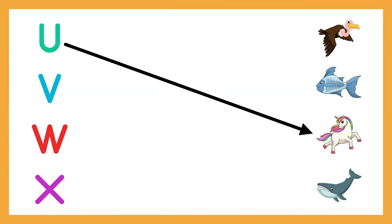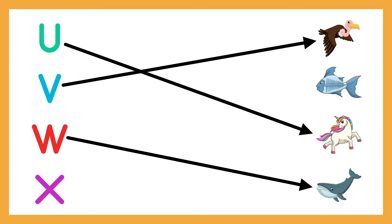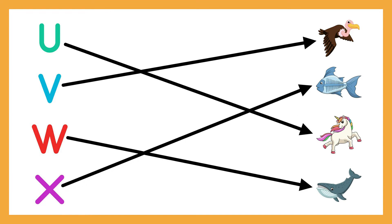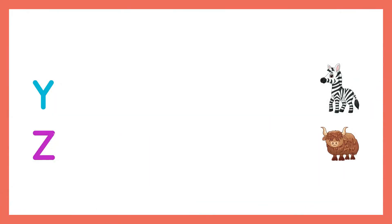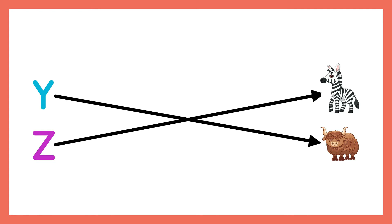U - Unicorn. V - Vulture. W - Well. X - X-ray Fish. Y. Z - Zebra.